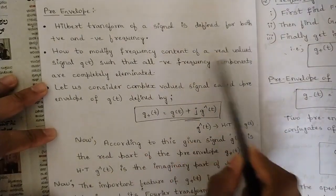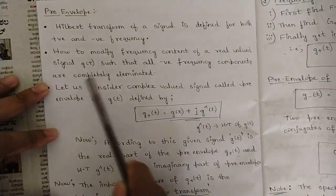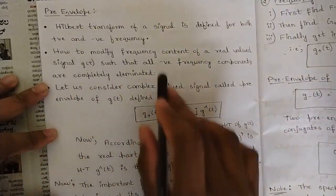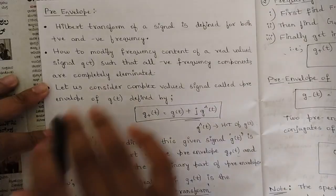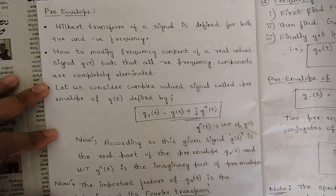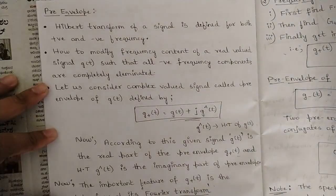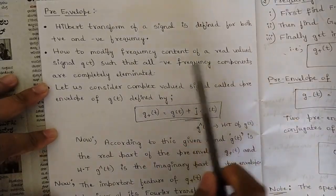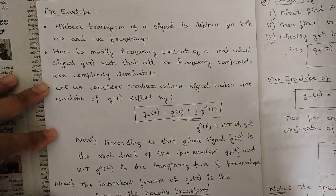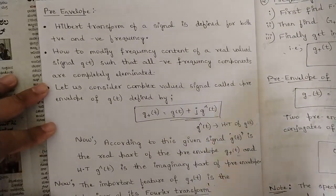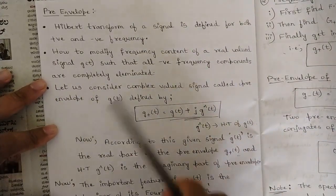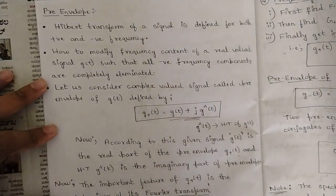How to modify the frequency content of a real-valued signal G such that all negative frequency components are completely eliminated? Whenever the phase reversal takes place and whenever we have one fixed amplitude, the frequency obtained from those signals won't be fixed — that frequency would be varying. So our goal is to eliminate all the negative frequency components.